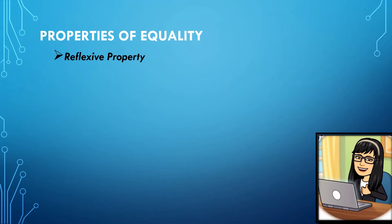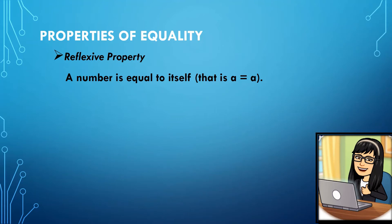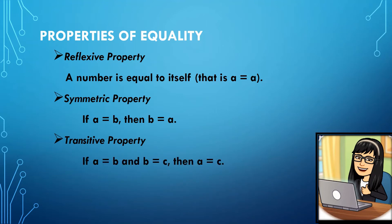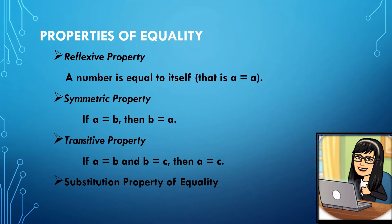Properties of Equality. Reflexive: a number is equal to itself — that is, A is equal to A. Symmetric property: if A is equal to B, then B is equal to A. Transitive property: if A is equal to B and B is equal to C, then A is also equal to C. Substitution property: if A is equal to B, then A may be replaced with B at any time. The concepts of substitution and transitive property are essentially the same.